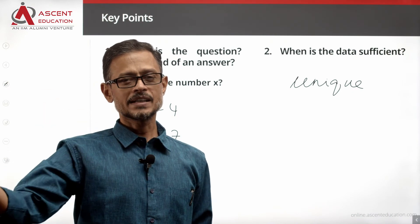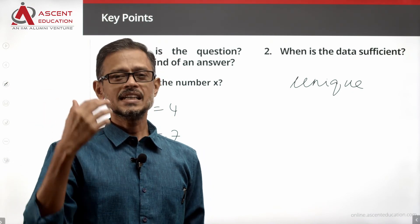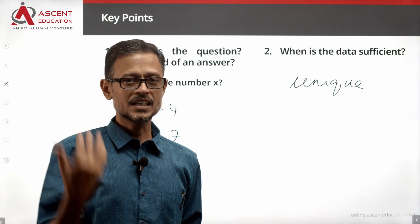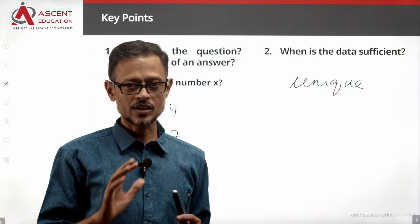If multiple answers are possible — 4, 7, 8, 11 — then the data is not sufficient.